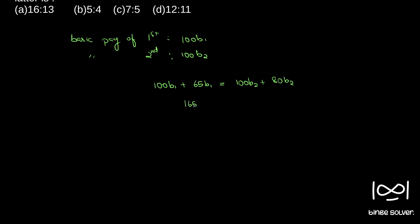So we have 165B1 equal to 180B2, or B1 by B2 is 180 by 165. So if you divide with 5, we have 36 and 165.